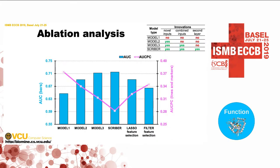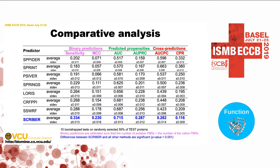We did an ablation analysis where we dropped particular parts of our model — dropped additional inputs not used in the past, dropped the second layer, or dropped the combination inputs. We show with this graph that all these design-specific features contribute to the predictive performance. The blue bars show AUC — as we add more elements, AUC goes up. And the pink line is the cross-prediction rate, the rate of prediction of the wrong type of residues, and that goes down.